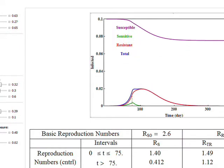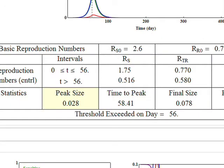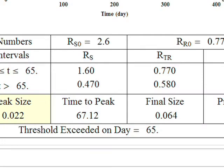The bottom table presents some summary statistics. That's another advantage of Mathematica. You can use those statistics packages to create all those numbers representing, for example, peak size, time to peak, the final size, and the fraction of resistant strains.